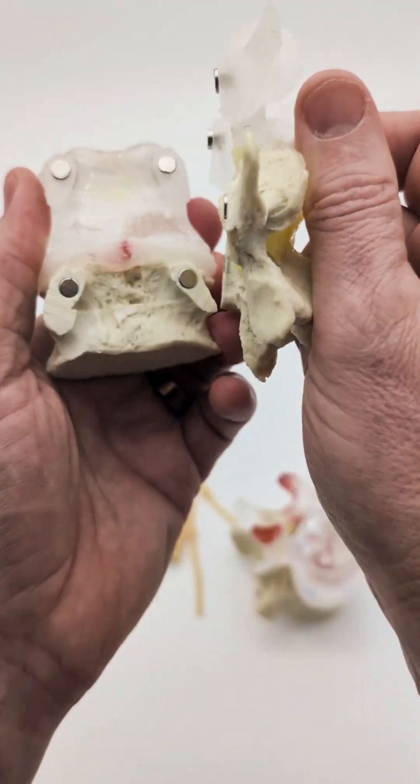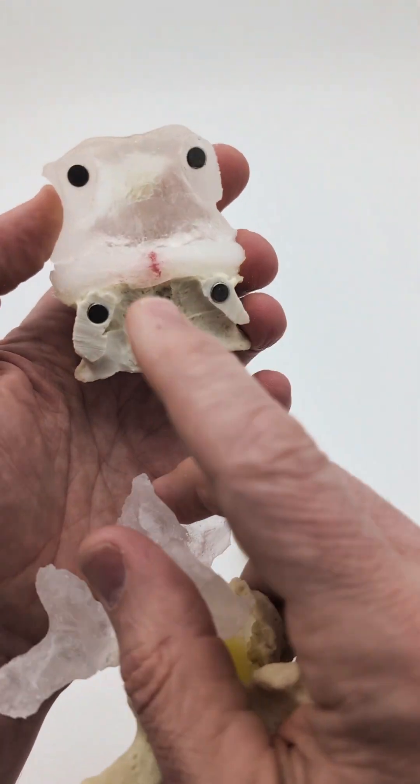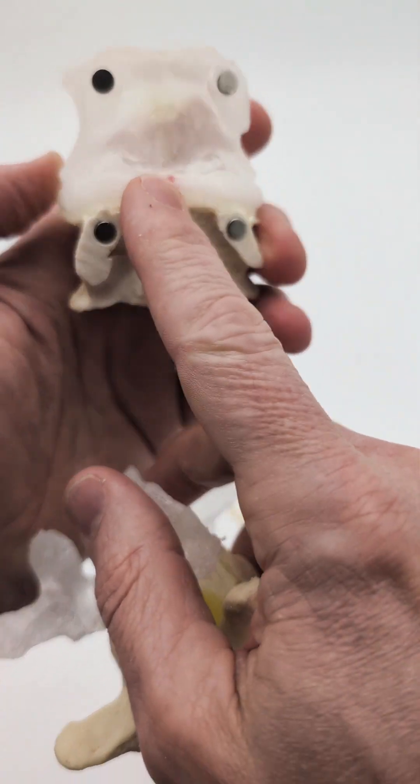In this model here, you can remove the posterior elements and see this annular fissure that's still present.